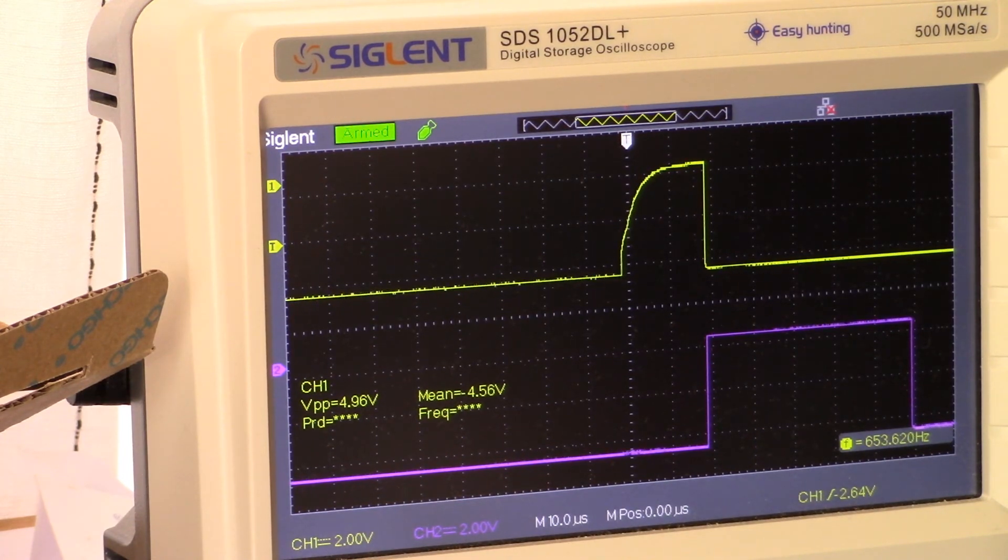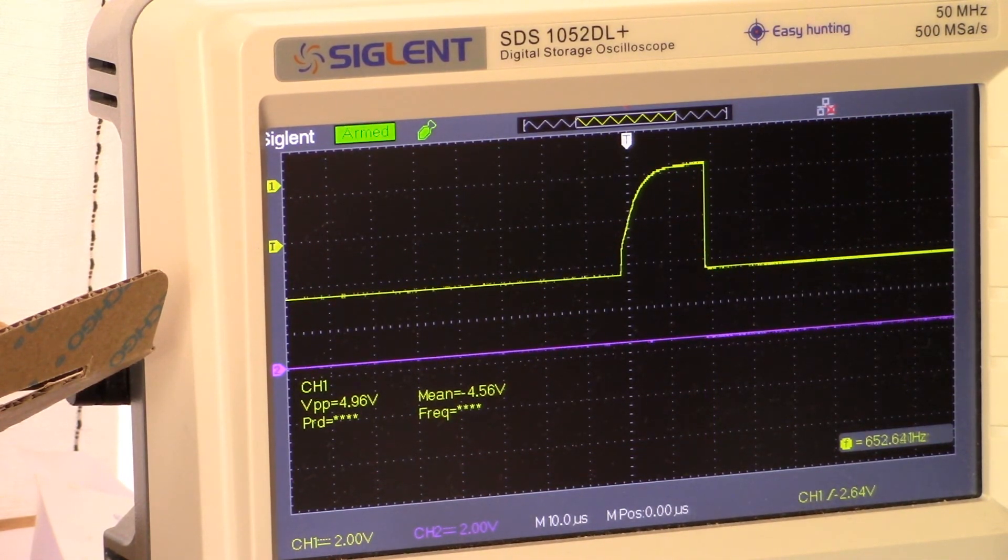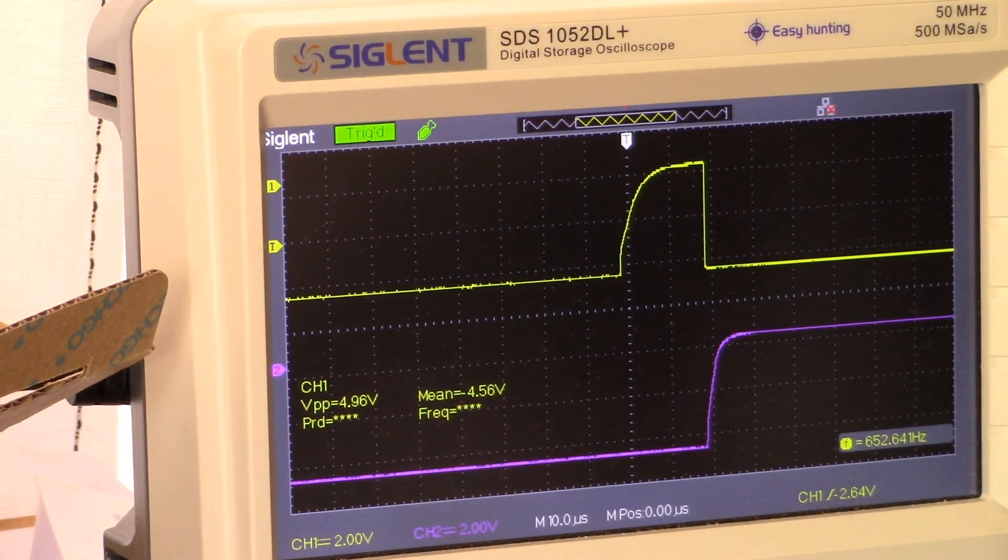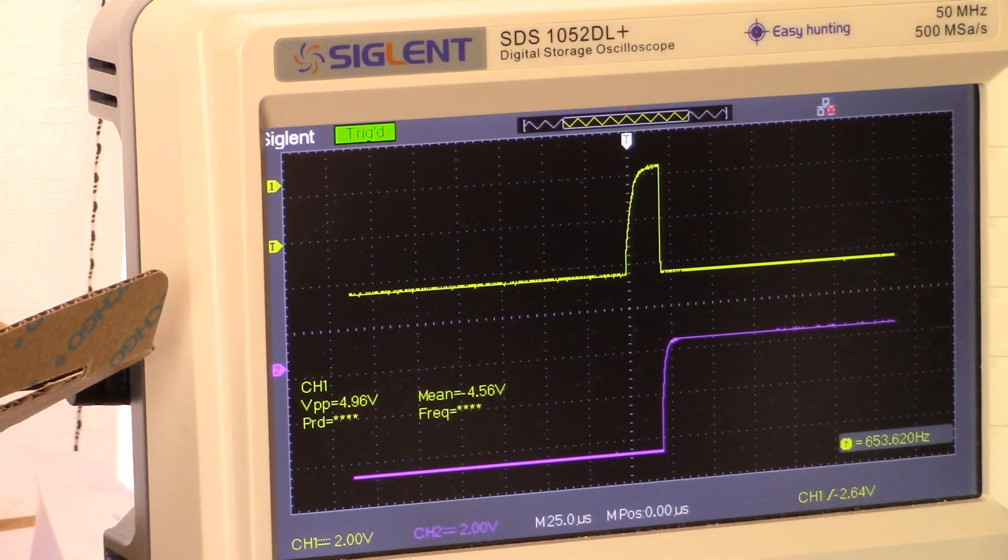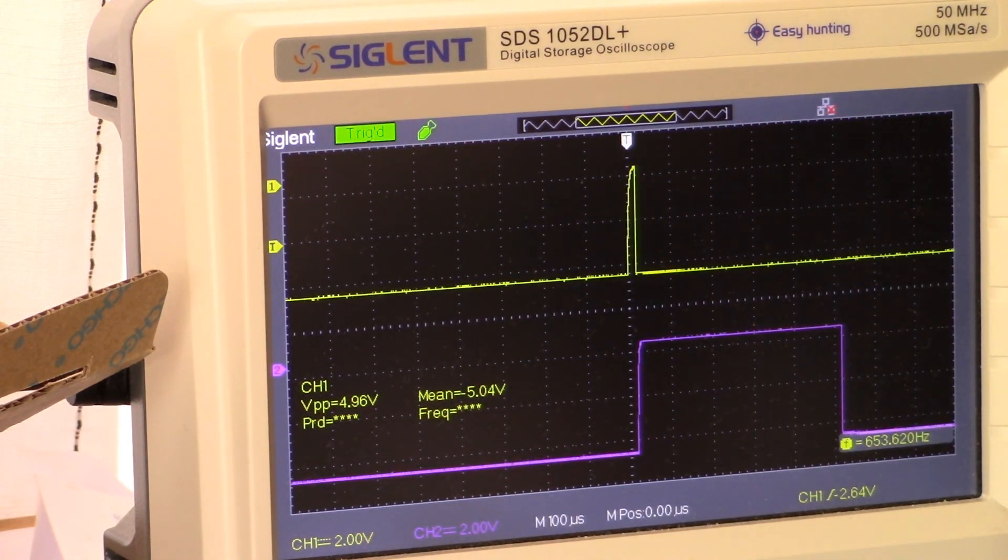Let's see what we get for secondary sample delay on pin eight. We're up to 100 microseconds per division. One, two, three, four... so about 500 microseconds. The build document says 400 microseconds plus main sample delay, so we're a little bit over there as well.